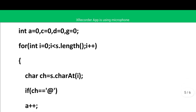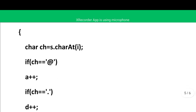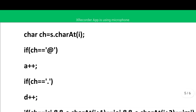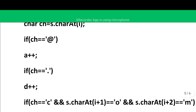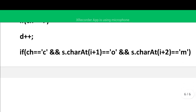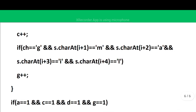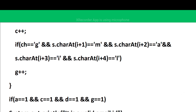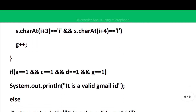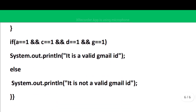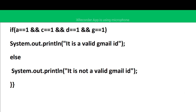We run a loop from 0 to less than length, extract each character, and check: if it is '@', a++; if it is '.', d++; if it is 'c' and the next two characters are 'o' and 'm', then c++; if it is 'g' and the next four characters are 'm', 'a', 'i', 'l', then g++. At the end, if a == 1, c == 1, d == 1, and g == 1, all four flags are set — it is a valid Gmail ID; otherwise it is not.